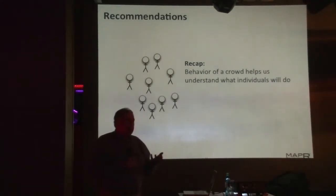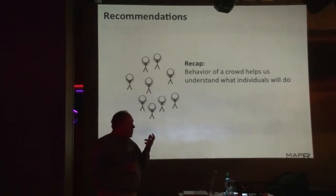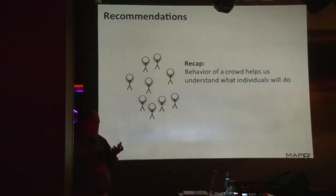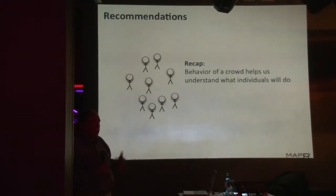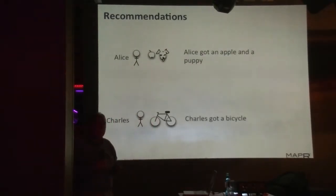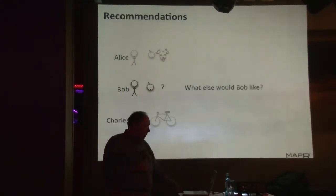The idea of recommendations is we want to look at the behavior of a crowd, see what they do, and from that understand what a single person will do. It's not that they'll be somebody identical to that person in the crowd — we're all different. But there will be components of behavior we can understand from various average behaviors, emergent behaviors. For example: suppose Alice gets an apple and a puppy, Charles got a bicycle, then Bob shows up and he gets an apple. What would we recommend? Obviously a puppy.